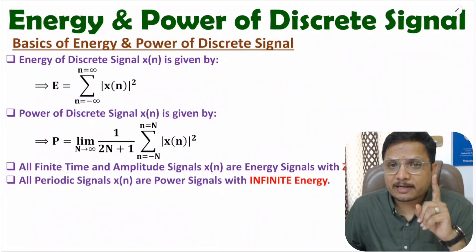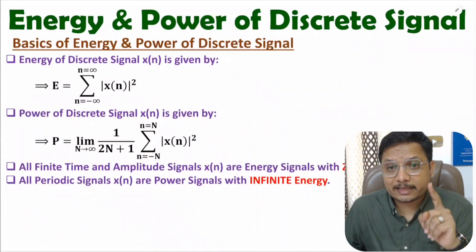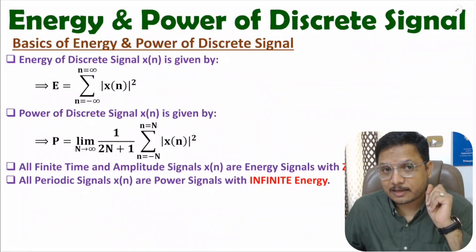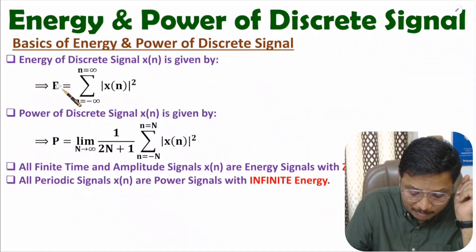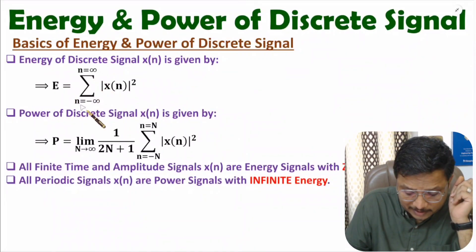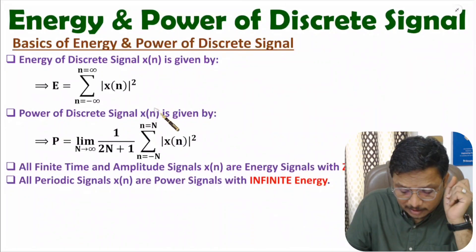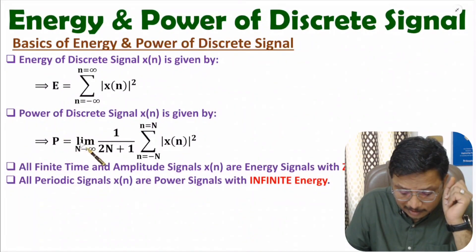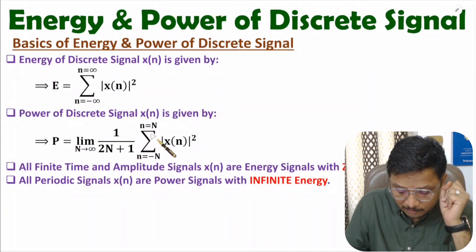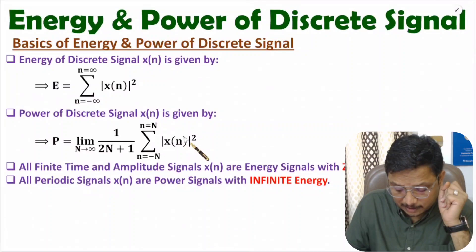Let us consider we have one discrete signal x(n). If you want to identify the energy of discrete signal x(n), then that energy can be calculated by summation where small n varies from minus infinite to plus infinite, of the square of the signal. If you want to identify the power of discrete signal x(n), then that power is: limit as capital N tends to infinite of 1 divided by 2N plus 1, where small n varies from minus N to plus N, of the square of the signal.